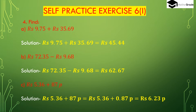5 plus 9 is 14, write 4 and carry over 1. Then 1 plus 7 plus 6 is 14, so we get 144 paise. 100 paise goes to the rupees column as 1 rupee. So 1 plus 9 plus 35 is 45 rupees, and the remaining 44 paise. So 9 rupees 75 paise plus 35 rupees 69 paise equals 45 rupees 44 paise.